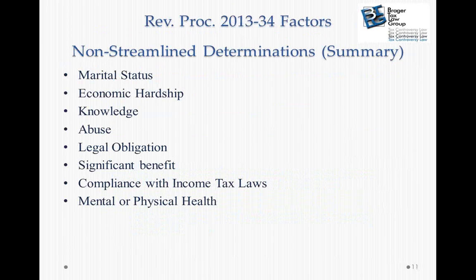If streamlined relief is not possible, we go to the non-streamlined determination, which is a list of factors the IRS considers in determining whether to grant equitable innocent spouse relief: marital status, economic hardship, knowledge, abuse, legal obligations, significant benefit, compliance with the income tax laws, and mental or physical health of the requesting spouse. We're going to talk about each one in a little more detail.